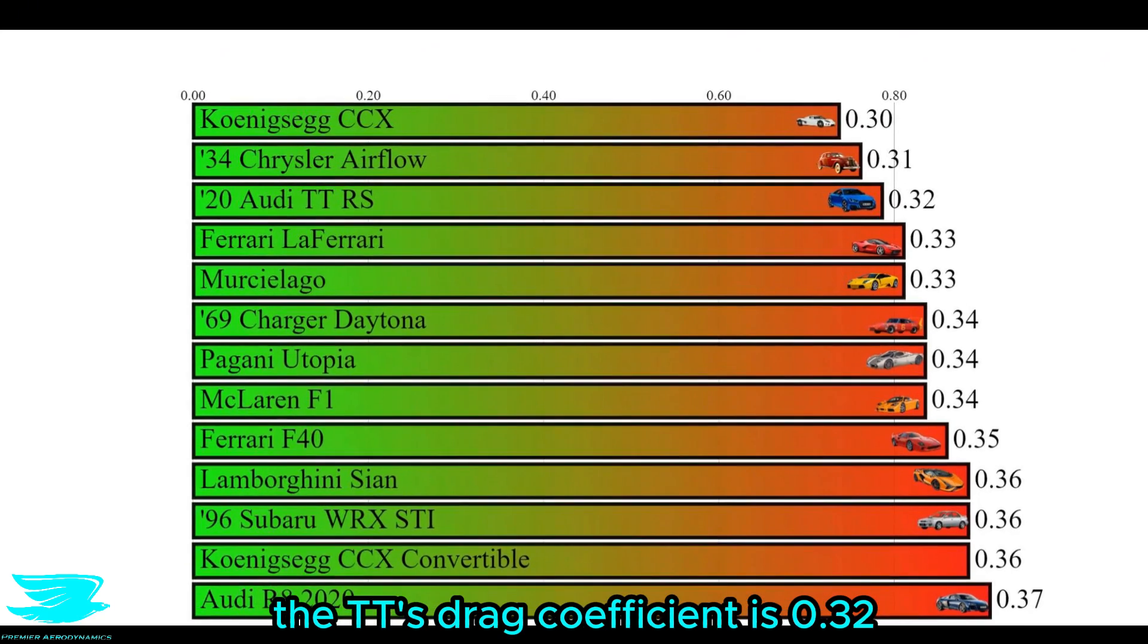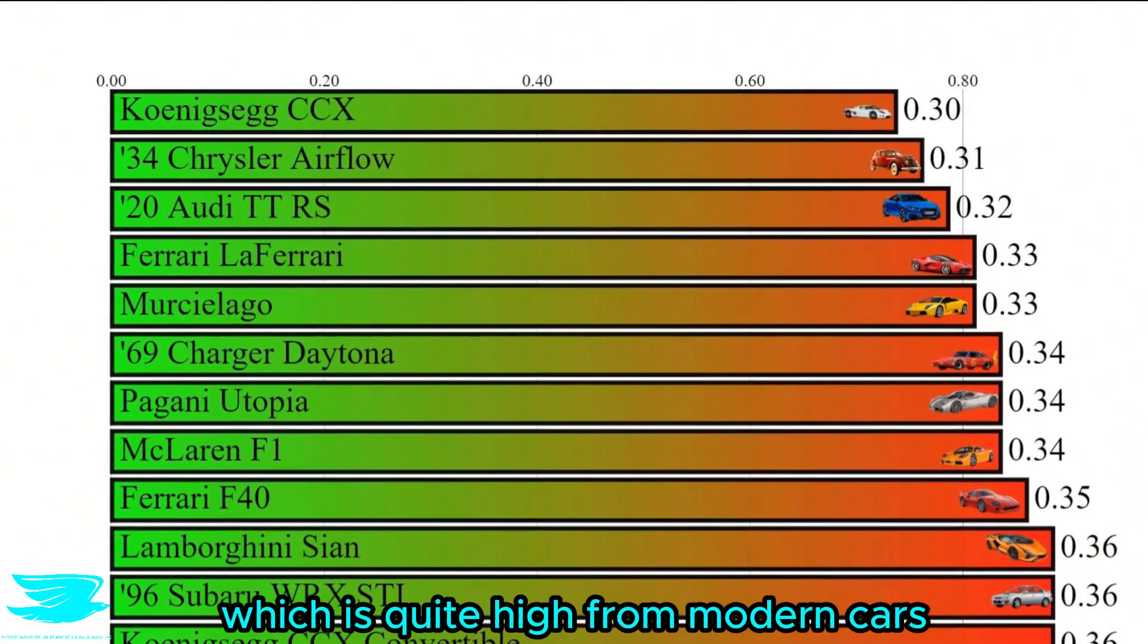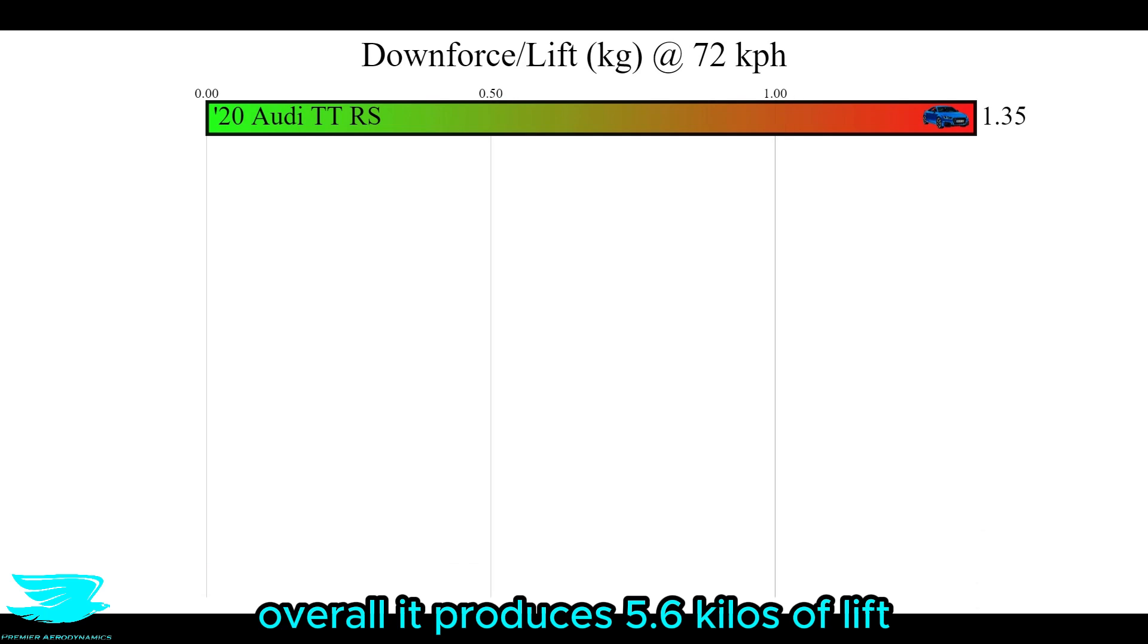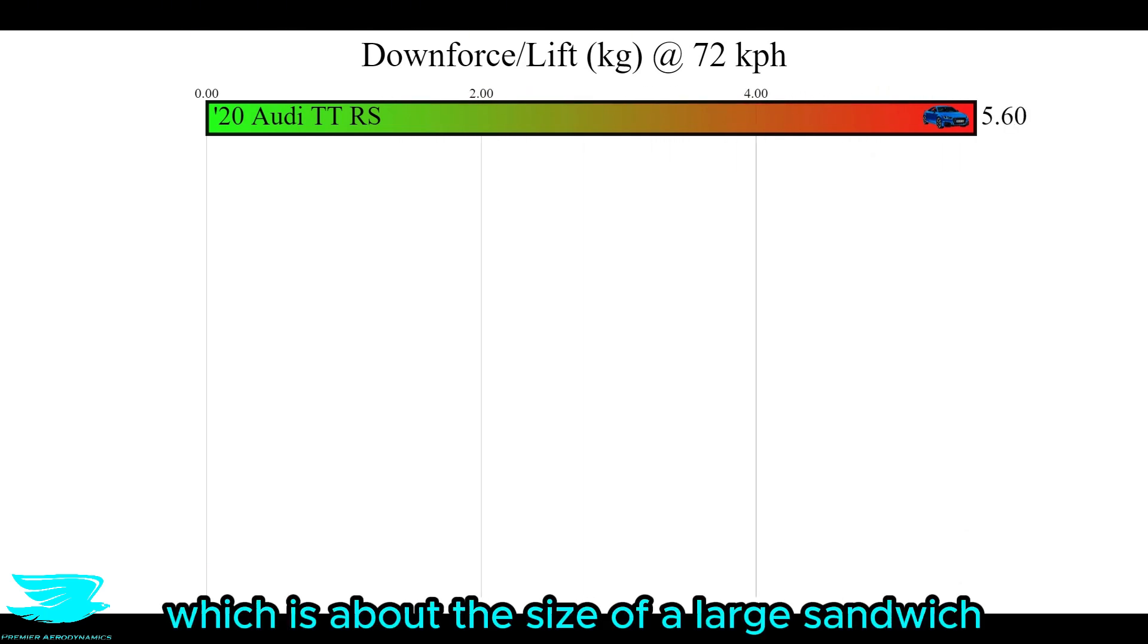The TT's drag coefficient is 0.32, which is quite high for a modern car, but a lot better than a supercar. Overall, it produces 5.6 kilos of lift, which is about the size of a large sandwich.